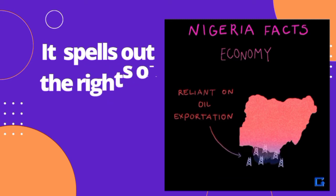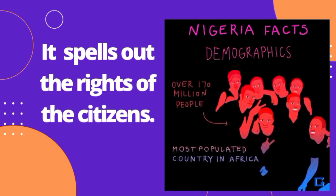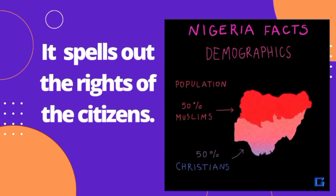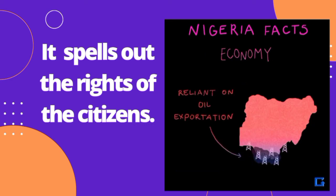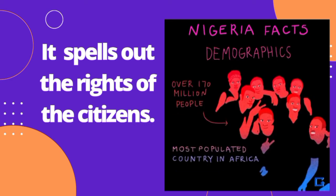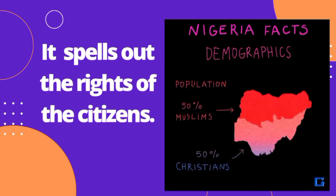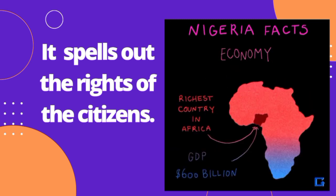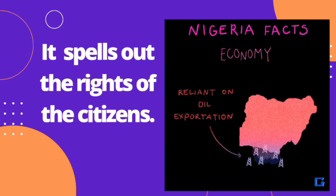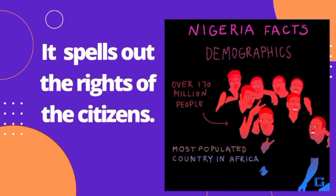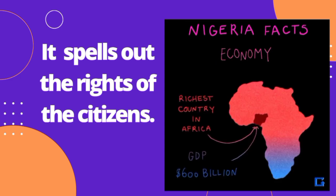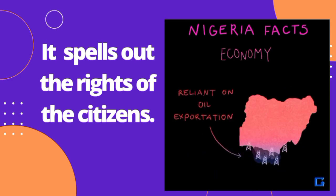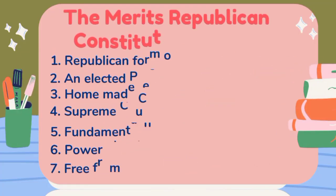The 1963 Republican Constitution also spelled out the rights of the citizens — their duties and obligations, and those things expected from citizens of the country. The constitution protected the fundamental human rights of the citizens. So it was a constitution that was fully homemade.